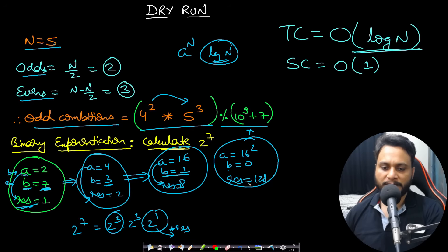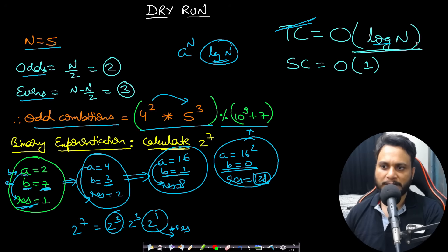We stop when the b value is 0 — that is how binary exponentiation works. The time complexity is O(log n) and the space complexity is O(1).